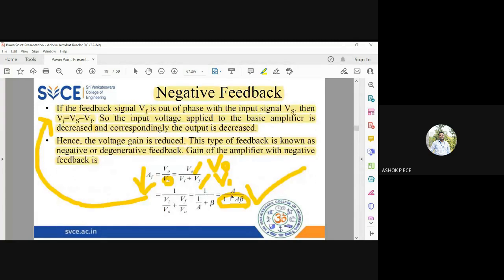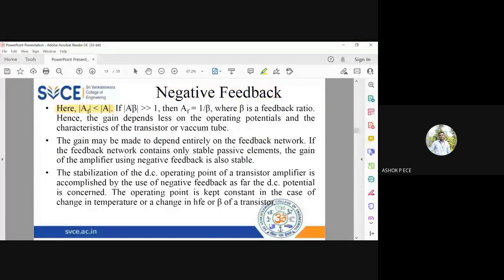AF is always less than A because of this plus sign in the denominator. If A beta is very much larger than 1, then 1 plus A beta can be approximated to A beta. So it is A by A beta. A will get cancelled. You can approximately write AF is approximately 1 by beta.